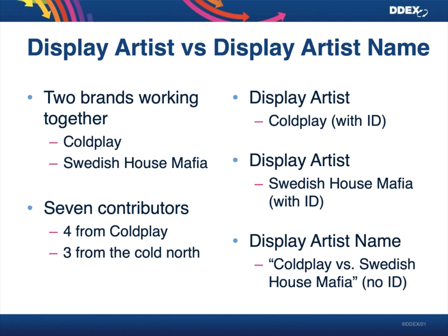But what happens if suddenly this collaboration ceases to be a collaboration and becomes basically a band on its own, with seven members working together on a semi-permanent basis? In that case, you would be creating a new display artist of 'Coldplay versus Swedish House Mafia' with an identifier and seven contributors. So you have a display artist with an identifier, a display artist name — the same string — without an identifier, and then all of the contributors. In the ERN message, these three bits of information are absolutely crucial.